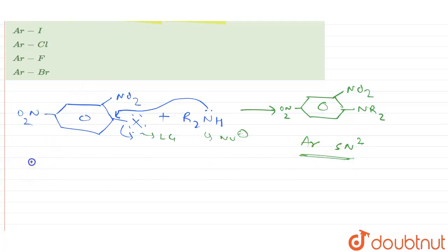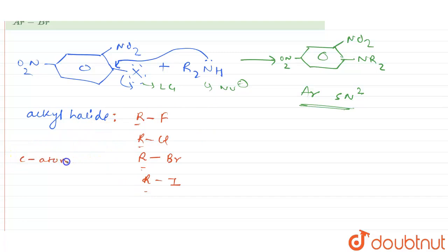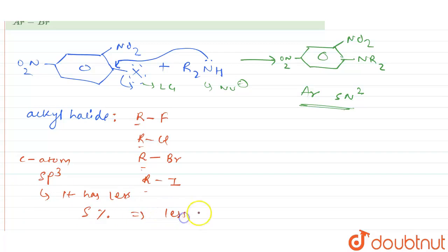Now consider alkyl halides: RF, RCl, RBr, RI — arranged according to their size. In alkyl halides, the R group carbon atom is sp3 hybridized. sp3 hybridization means less s-character, which means less electronegativity on that carbon. Therefore the electronegativity difference between the halide ion and the carbon atom of the alkyl group is quite high.